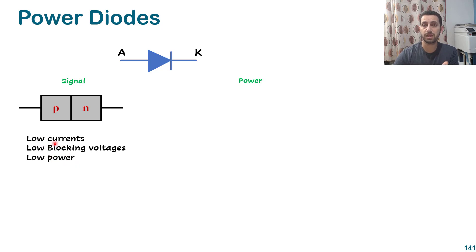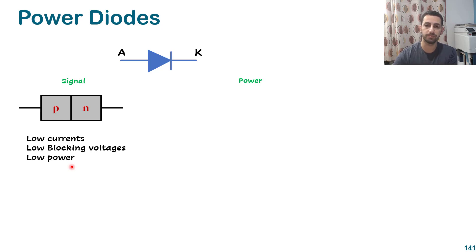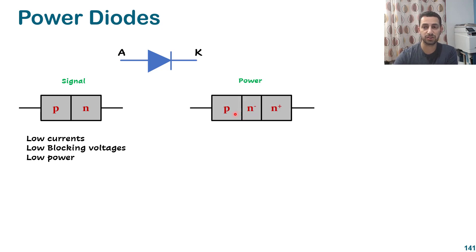By low current I mean it doesn't have the capability to pass amps or kilo-amps of current. Low blocking voltage means it can handle up to maybe 100 or 200 volts but not 1000, 2000, or 5000 volts. And for low power, it can deal with small power in microwatts, milliwatts, or a few watts, but not in kilowatts. The power diode has a different structure and brings different and extended properties and features.